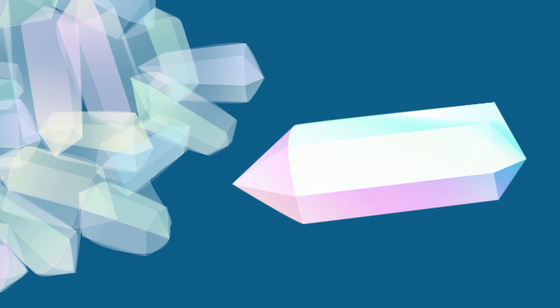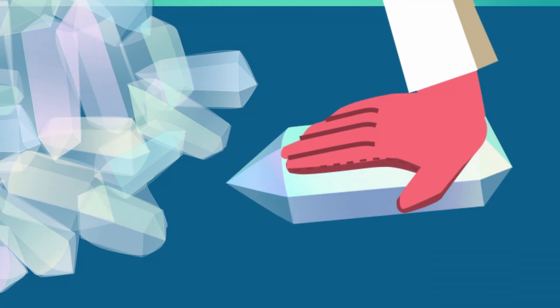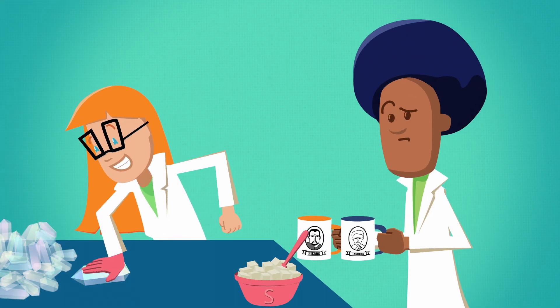This is a crystal of sugar. If you press on it, it'll actually generate its own electricity. How can this simple crystal act like a tiny power source? Because sugar is piezoelectric.